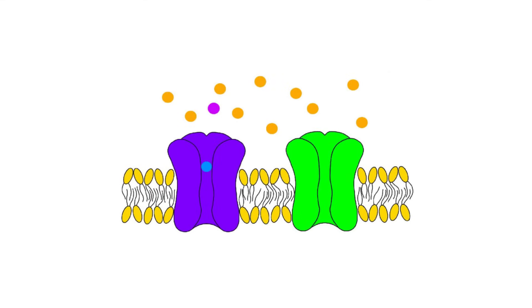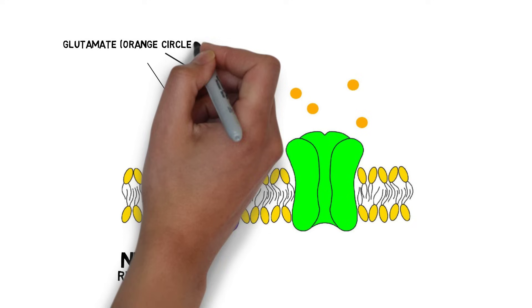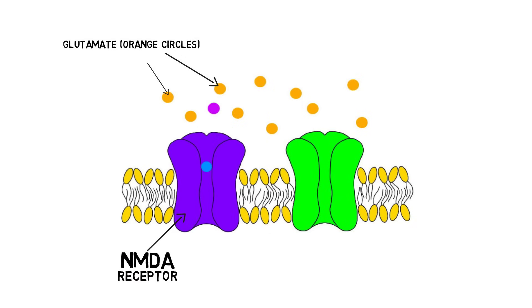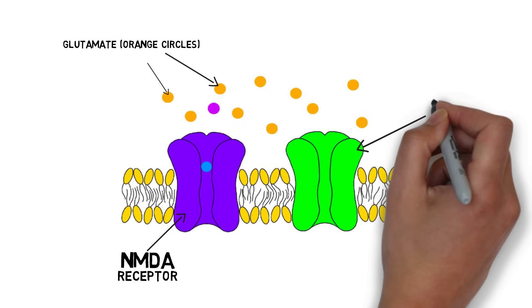There are a number of ways in which LTP can occur. The best-known mechanism involves a glutamate receptor known as the NMDA receptor. In NMDA receptor-dependent LTP, glutamate release first activates a subtype of glutamate receptor known as the AMPA receptor.